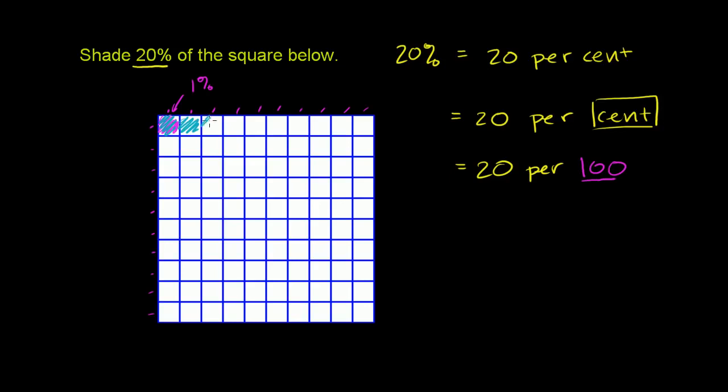we'd do 1, 2, 3, 4. Actually, if we shade this entire row, that will be 10%, right? 1, 2, 3, 4, 5, 6, 7, 8, 9, 10.